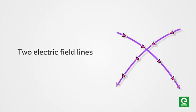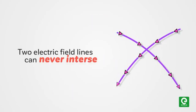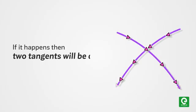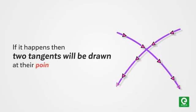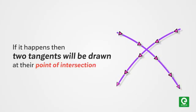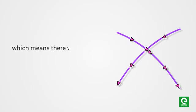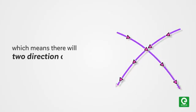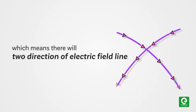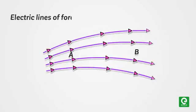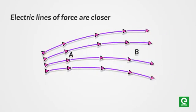Two electric field lines can never intersect. If they did, two tangents would be drawn at their point of intersection, which means there would be two directions of the electric field at that point — which is not possible.